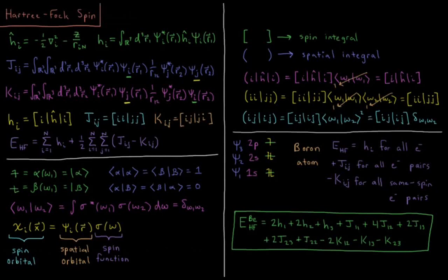In this video we'll discuss the use of spin in Hartree-Fock and how this leads to a simplified expression for the Hartree-Fock energy of any given atom. We'll remind ourselves of our one-electron energies and integrals here in Hartree-Fock, the one-electron operator being the kinetic energy operator for electron i, plus the potential energy of the electron being attracted to the nucleus — minus charge of the nucleus divided by distance to the nucleus r_in.